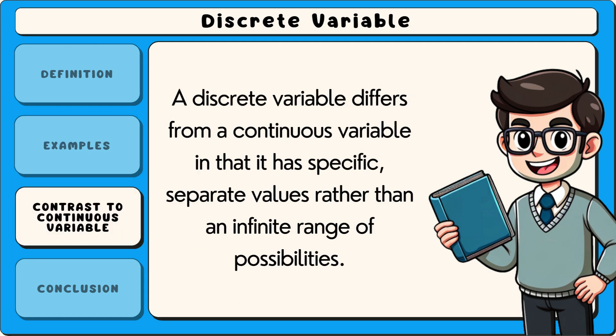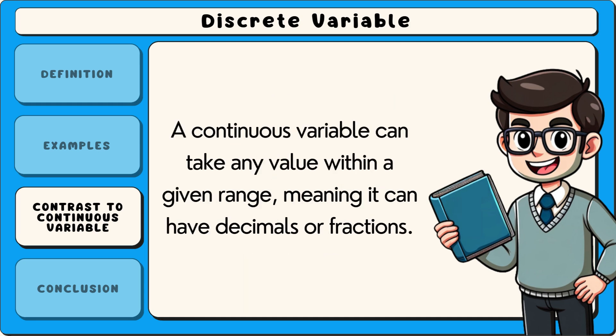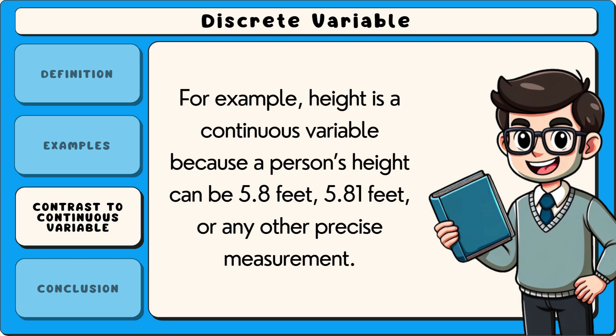A discrete variable differs from a continuous variable in that it has specific, separate values rather than an infinite range of possibilities. A continuous variable can take any value within a given range, meaning it can have decimals or fractions. For example, height is a continuous variable because a person's height can be 5.8 feet, 5.81 feet, or any other precise measurement.